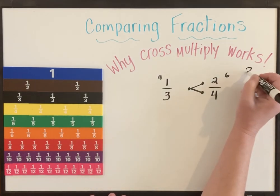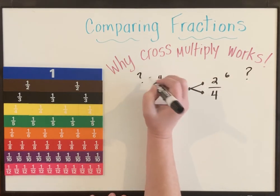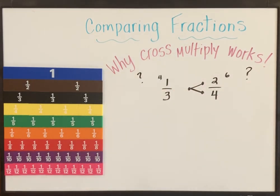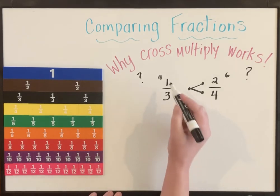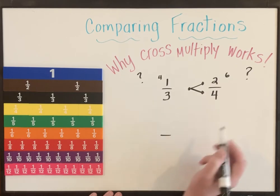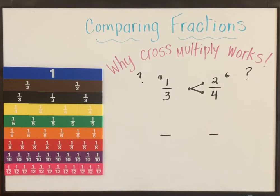But in case you're wondering where on earth do those numbers come from and why does this work? I'm going to show you using numbers and tiles, our fraction tiles here. It has everything to do with finding equivalent fractions using a common denominator. I want to take each of my fractions and get them to a denominator that I know they have in common. And then using my equivalent fraction strategy of multiplication, I'm going to find what's equivalent.